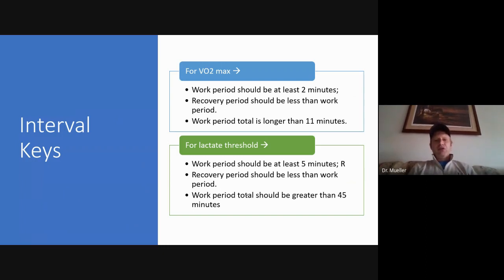For lactate threshold, the work period should be at least five minutes. The recovery period should be less than the work period again. And the total work period should be greater than 45 minutes. Lactate threshold intervals are going to usually be a much longer workout than VO2 max intervals will be because of that.